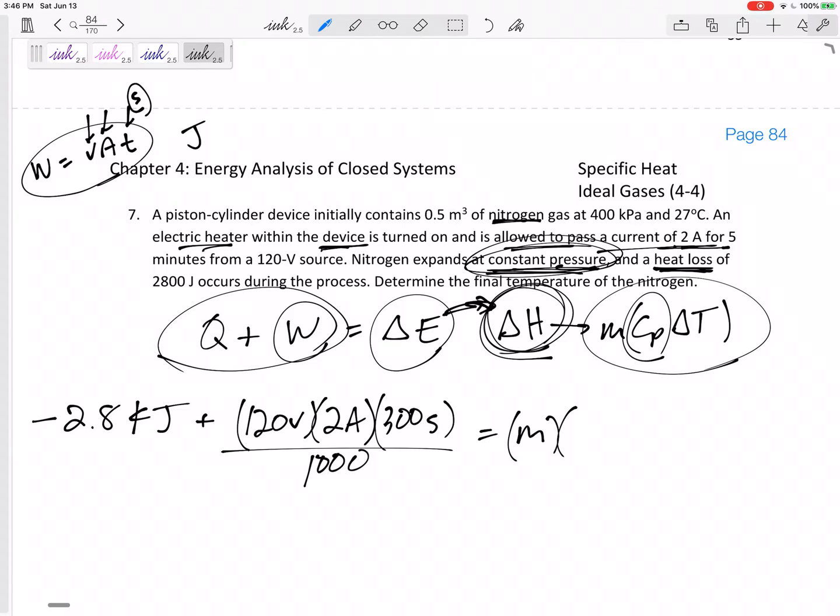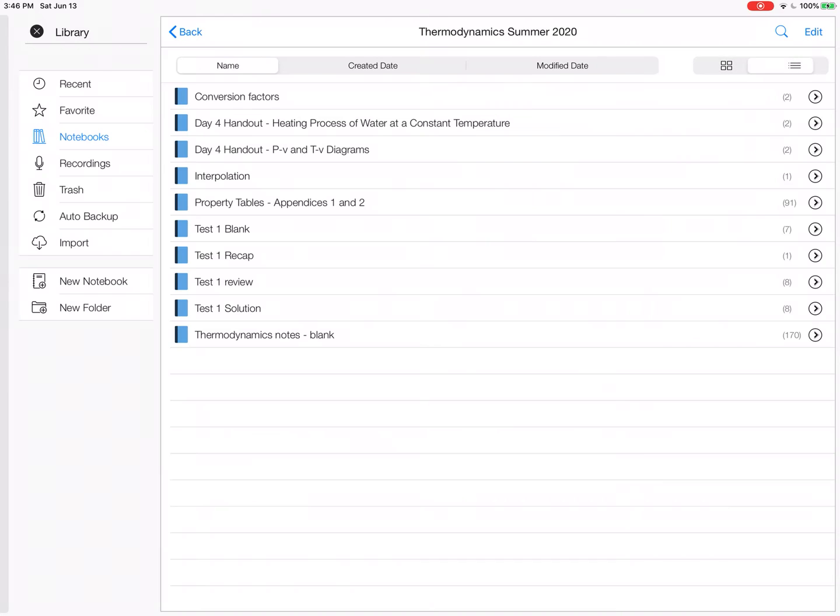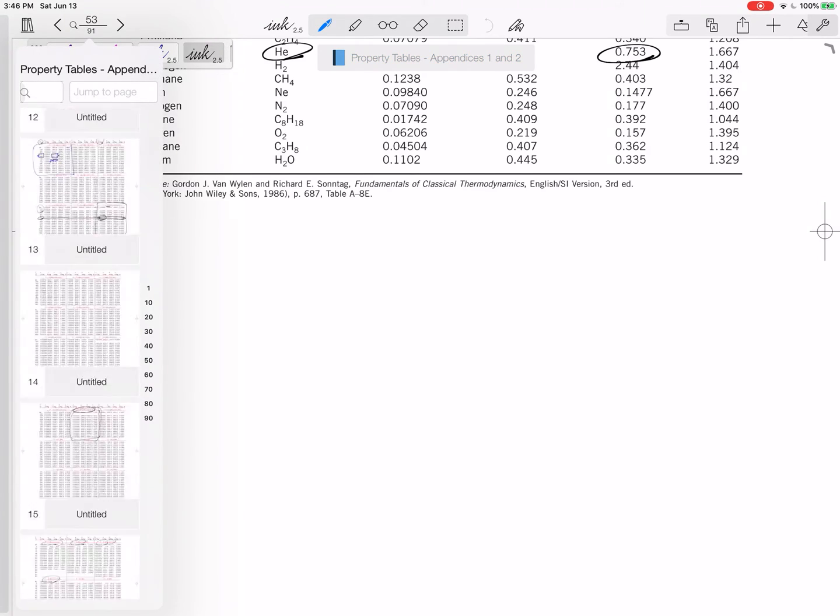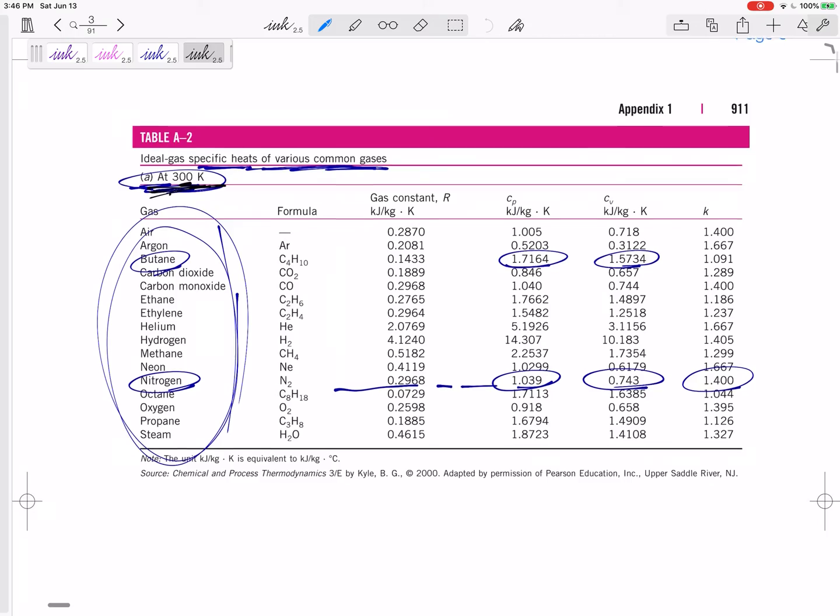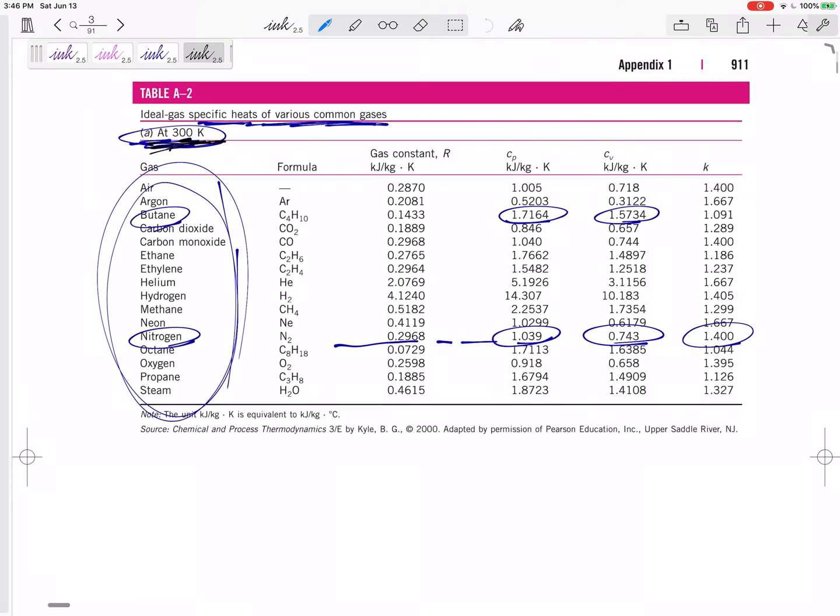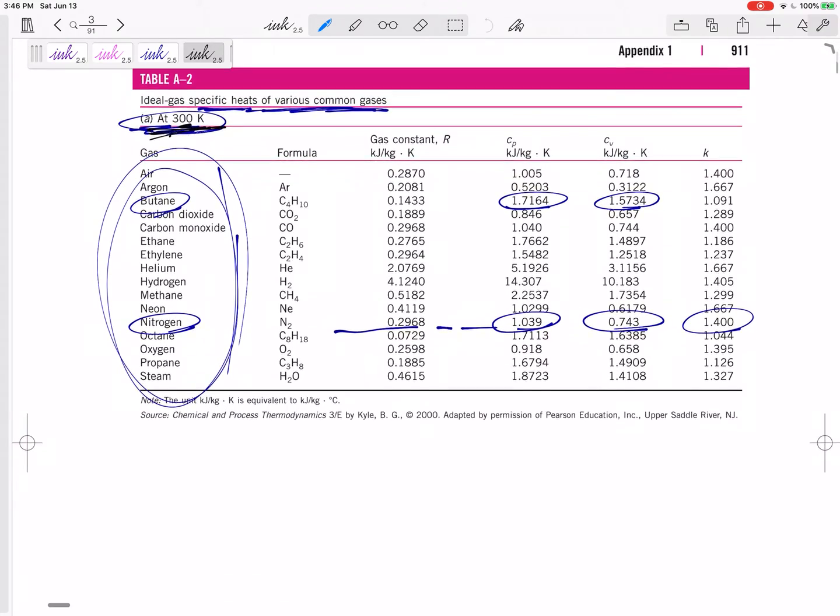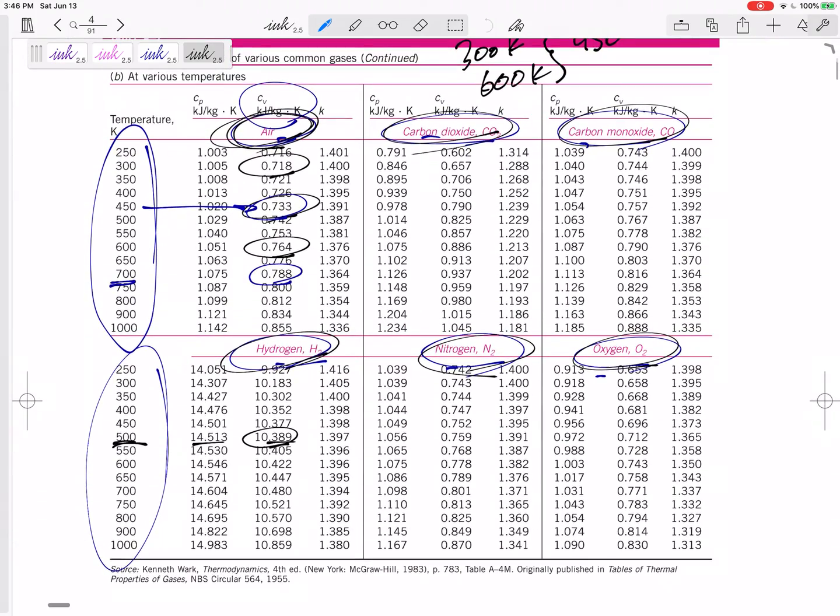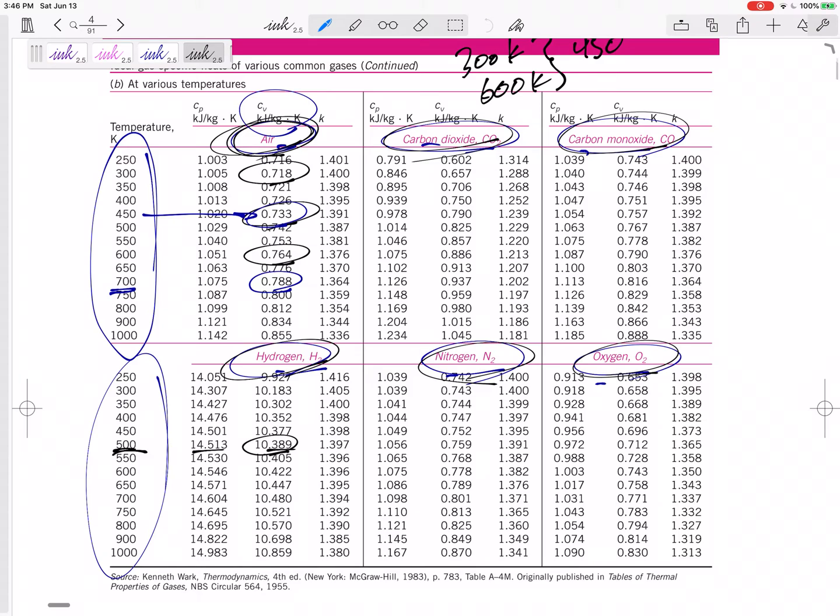What is the cp for nitrogen at 27 degrees C, which is 300 kelvin? So go to property tables - we're in SI units - go to table A-2, that's at 300 kelvin, or I could go to this one for nitrogen, but I'm still reading off the same.